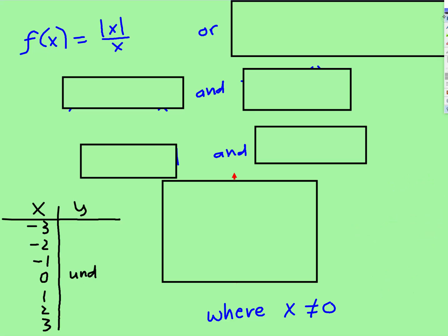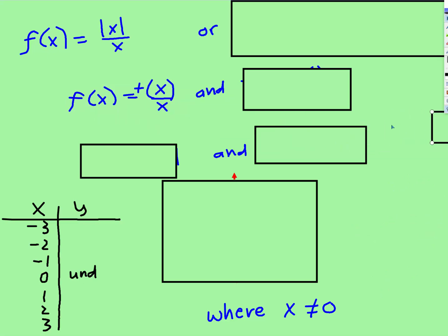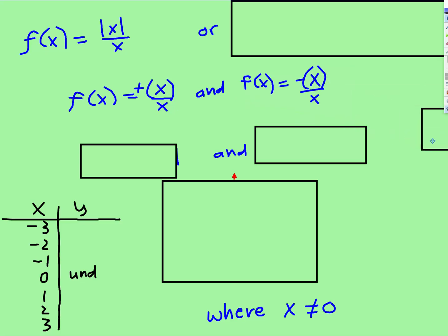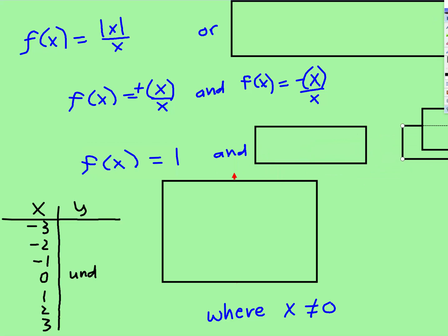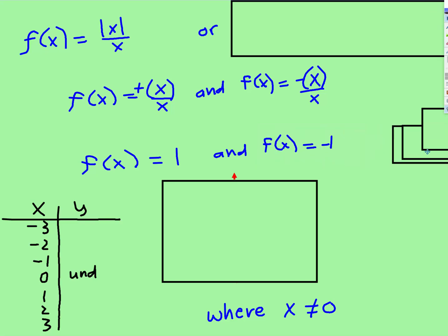In these problems there will also be two separate things going on. There will be the positive version — we remove the absolute value and get positive x over x — and then the negative x over x. So it's both versions. What is 1x divided by 1x? That's 1. And negative 1x over 1 is negative 1. The opposite of 1 is negative 1.